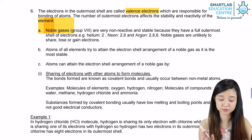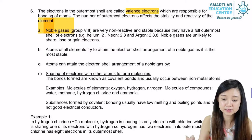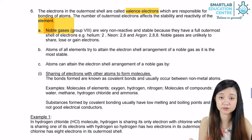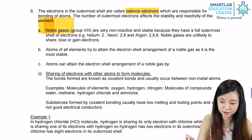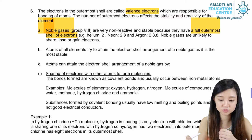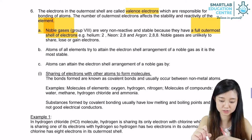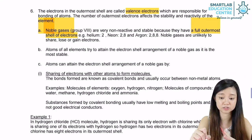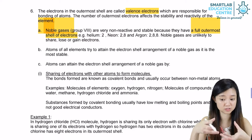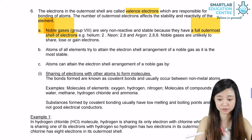In the last group of the periodic table, we have a group of elements called the noble gases. They are very non-reactive and very stable, because they already have a full outermost shell of electrons. For example, helium has 2 electrons in the first shell and it's already full. For neon, it has 2 electrons in the first shell and 8 electrons in the outermost shell — with 8 electrons in the outermost shell, it's considered full. And for argon, it also has 8 electrons in the outermost shell.